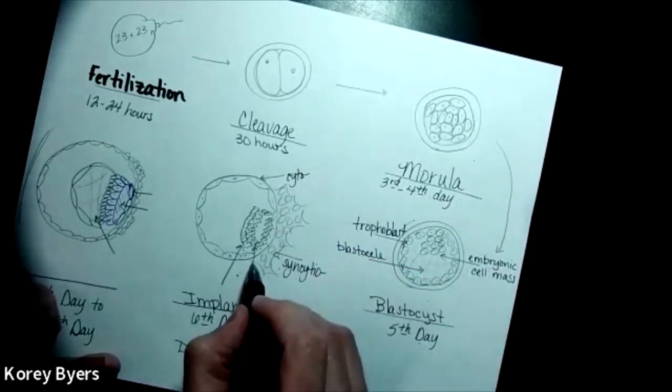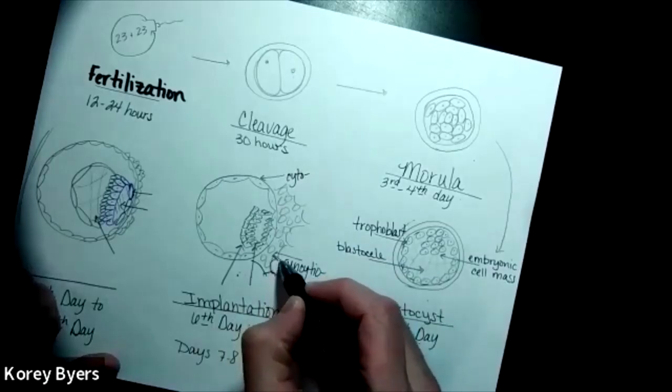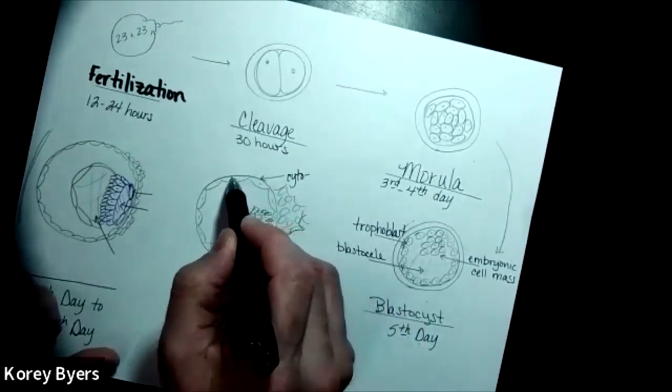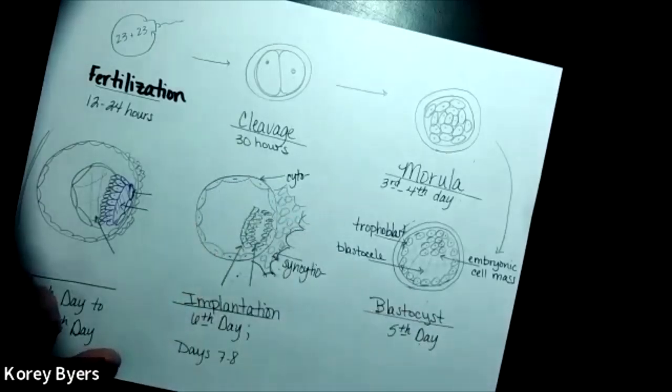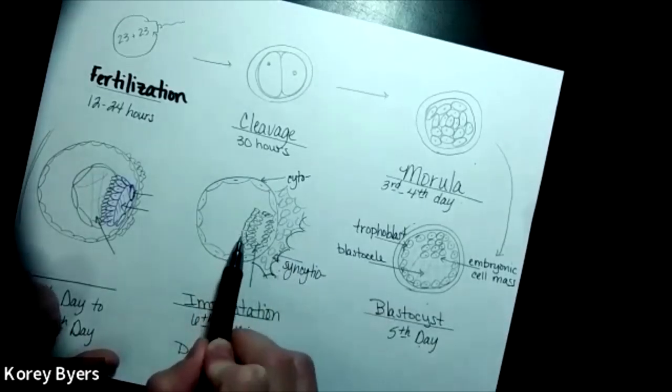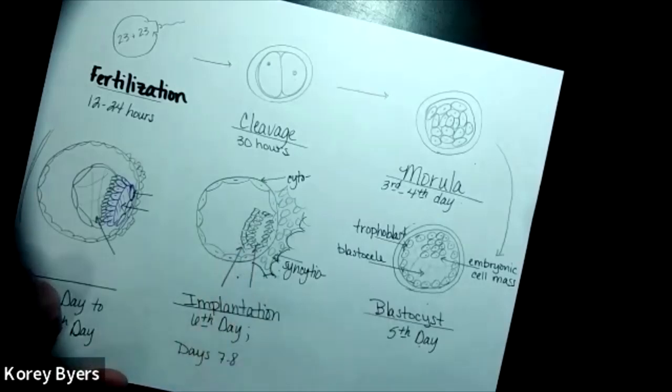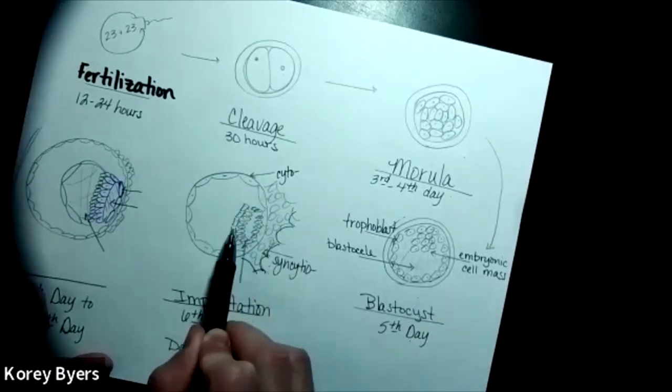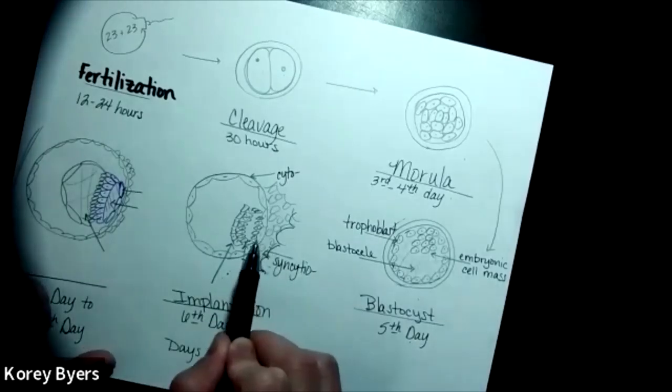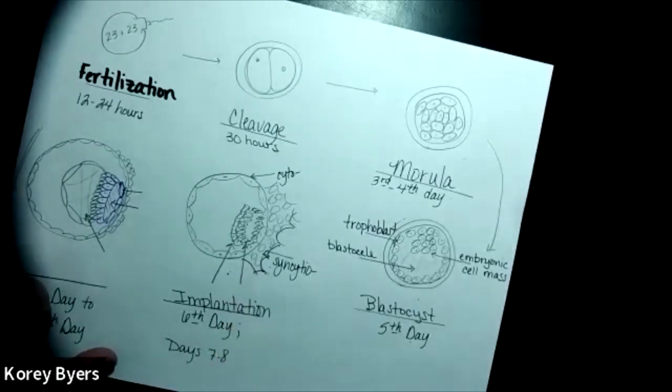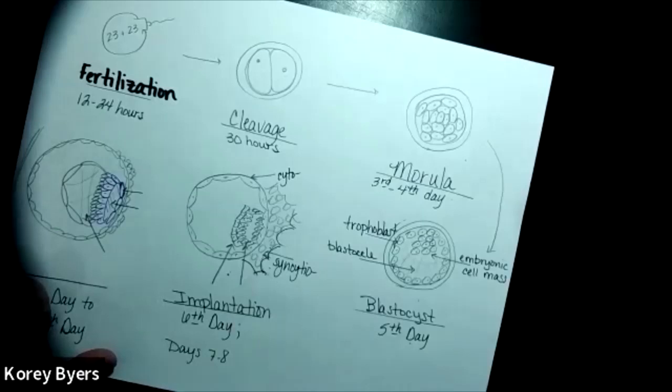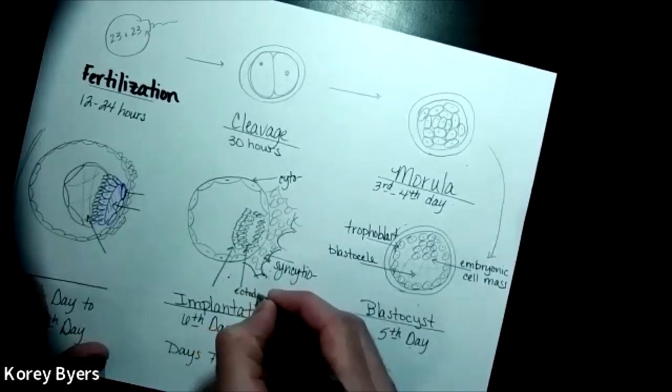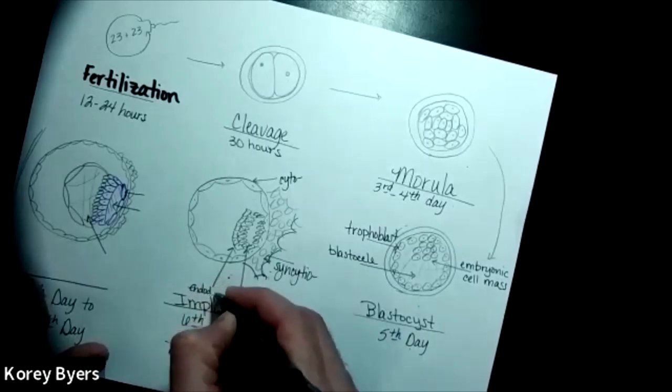The syncytial trophoblast, based on some physiology and some hormones released, are going to begin to dissolve that endometrial lining and create that connection, while the cytotrophoblast is going to form that circular embryonic structure. We can also begin to see some gastrulation or some separation and formation of structures. Gastrulation is actually formation of the beginnings of organs, but we begin to see these layers form from the embryonic cell mass to these distinct layers. Here we begin to see the beginning structures of our primary germ layers, our ectoderm and endoderm.